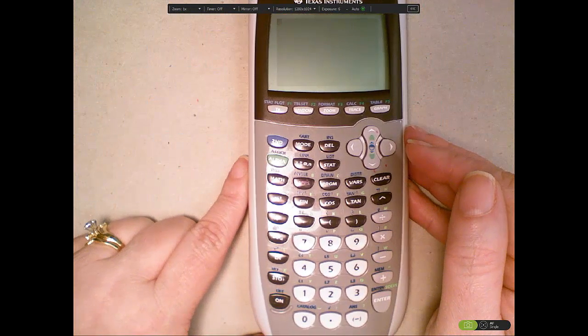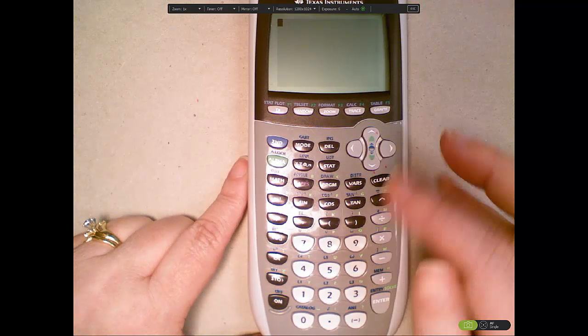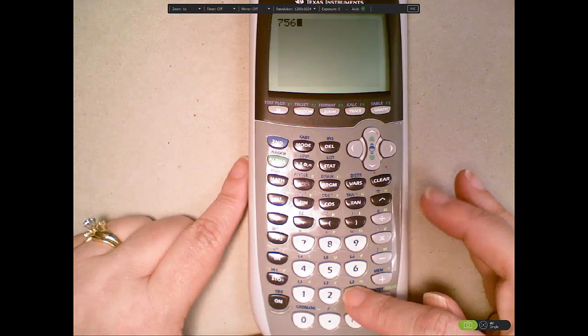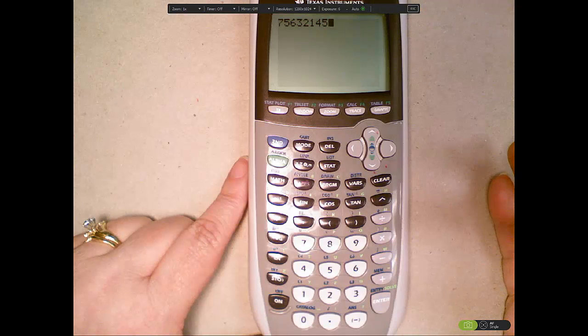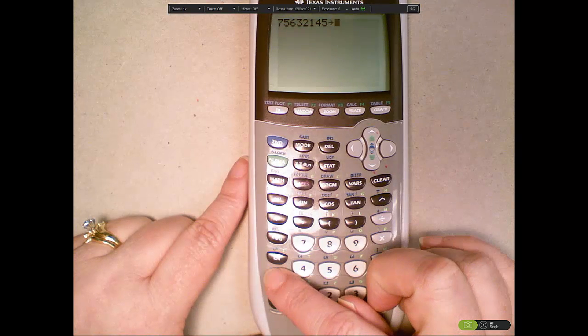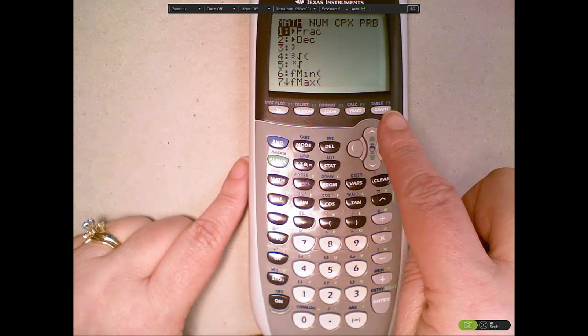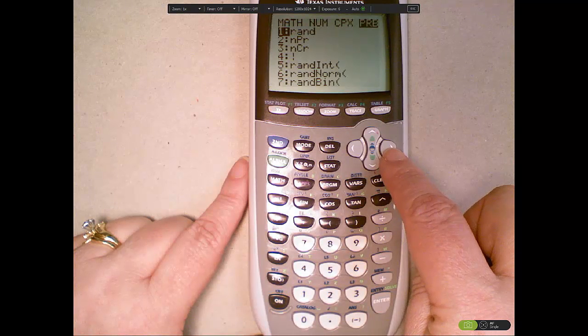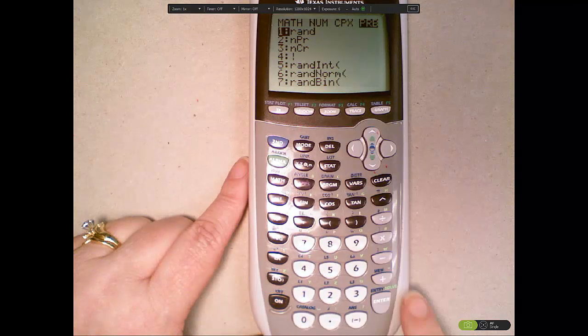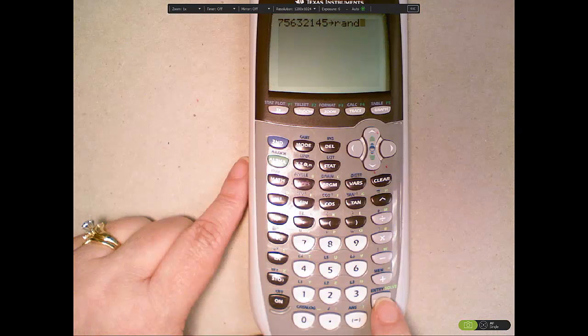Now let's look at how it looks on an actual calculator. Put in any number — the length doesn't even matter, but you don't want a very short number. Then press the store key, which is right down here next to the 4, to get the arrow. Then press the math key, go over to probability using the arrow, and once you get to probability, RAND is number 1, so you can press 1 or enter. Press enter and it gives you the same number back, and we're done.